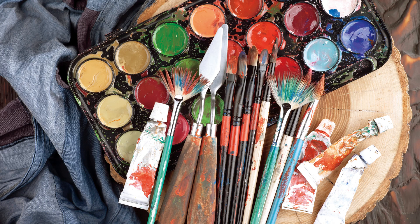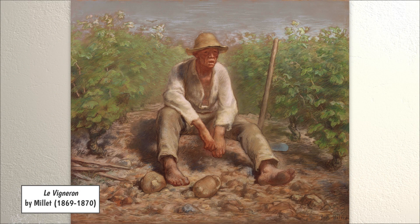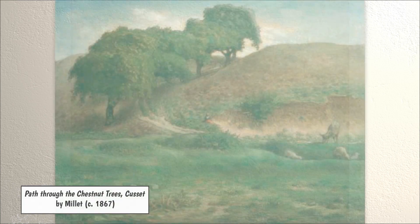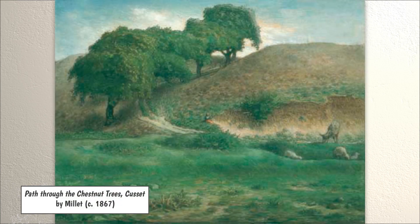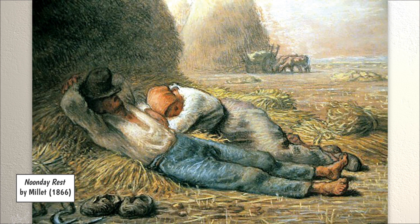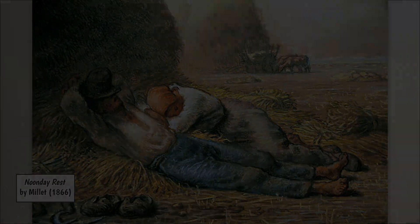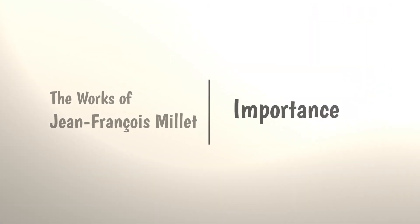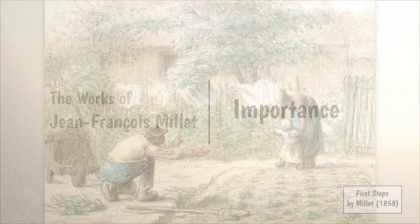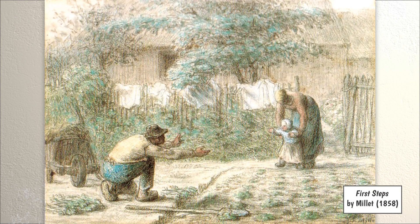Millet continued to do well even in the later years of his life. People continued to pay him to create art for them. He created more than 100 works in the last 10 years of his life. Many people also went to see Millet's paintings and art shows both in Europe and America. People around the world bought his work. Millet's paintings had a great effect on artists who came after him. He inspired famous artists such as Monet, Renoir, and Van Gogh.